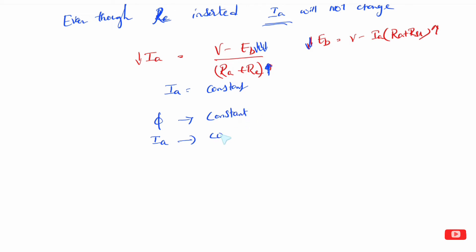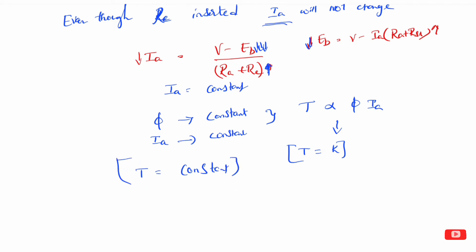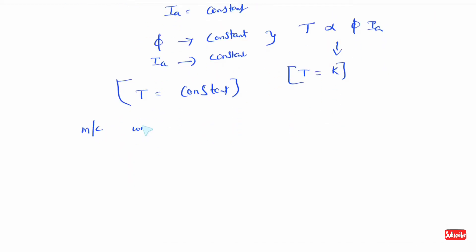If you choose the torque formula: torque proportional to phi into Ia. Since phi is constant and Ia is constant, torque is equal to constant. So it means T is equal to constant. This method therefore operates as a constant torque method. Field control method operates as constant power, whereas armature resistance control method operates as constant torque.